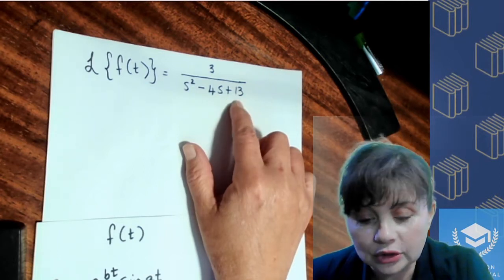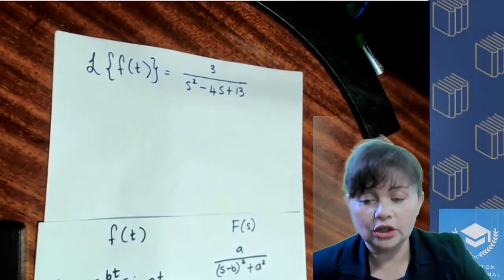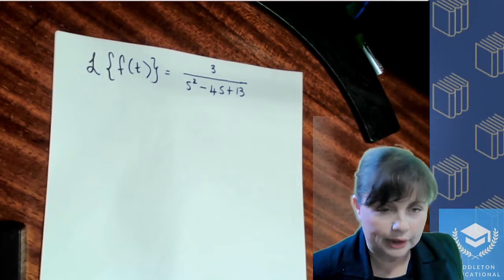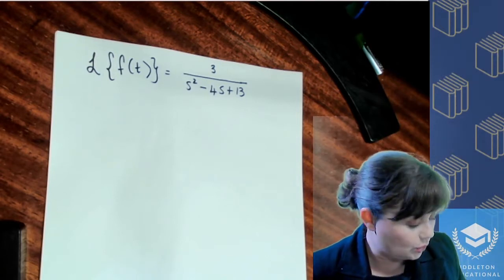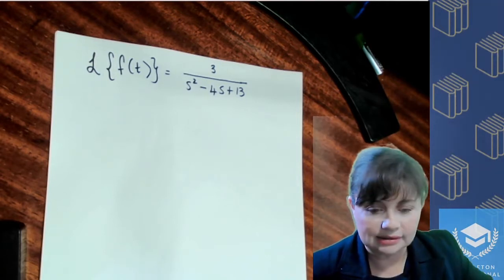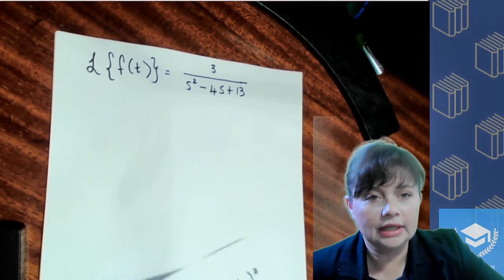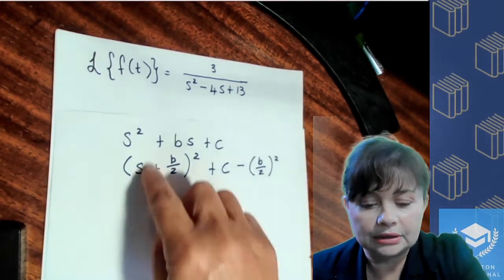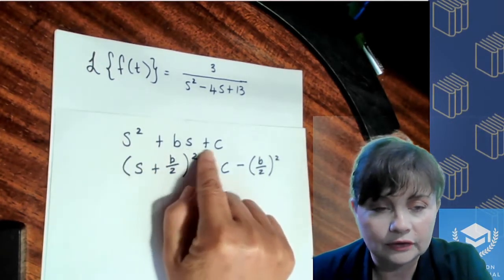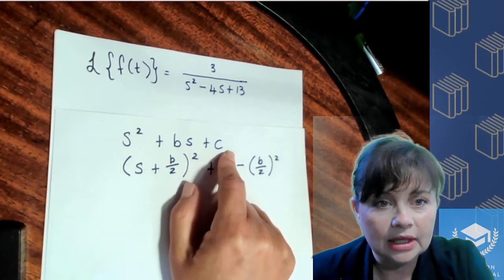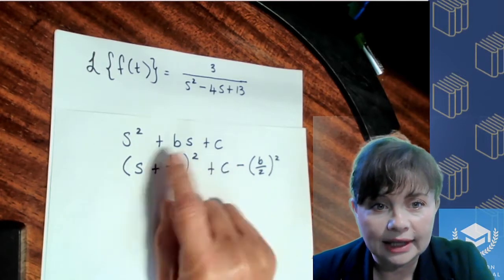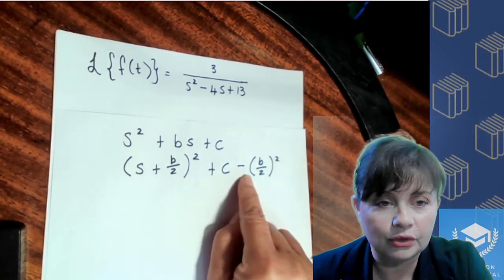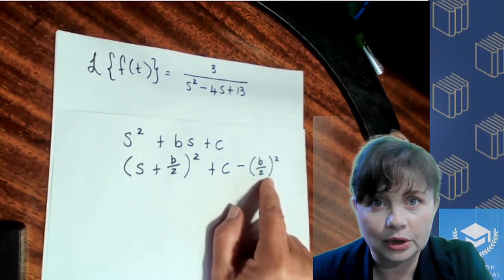So the way we're going to work with this is we are going to use completion of the square. Completion of the square looks like this: if you have a trinomial of this form, it can be changed into this other form using this formula.